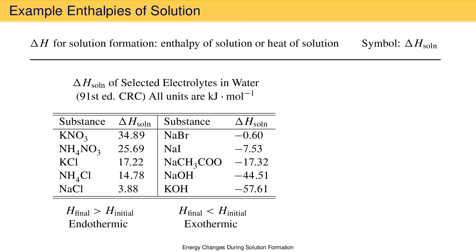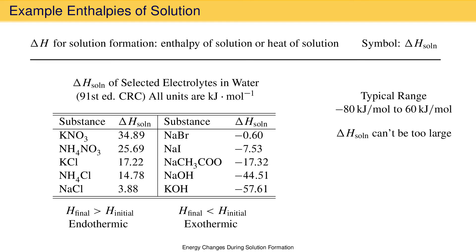Heats of solution for species with a +1 cation and −1 anion typically fall between −80 kJ/mol and +60 kJ/mol for compounds that dissolve in water. Substances with enthalpies of solution that are too positive will tend not to dissolve, because the things working against solution formation — solute-solute and solvent-solvent interactions — outweigh the things working for it — solute-solvent interactions and the entropy increase upon dispersal — making dispersal non-spontaneous and the solute insoluble.